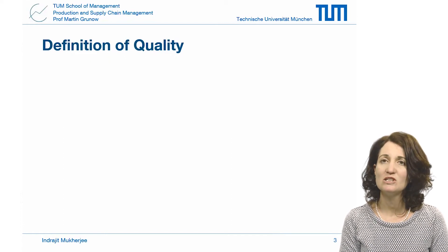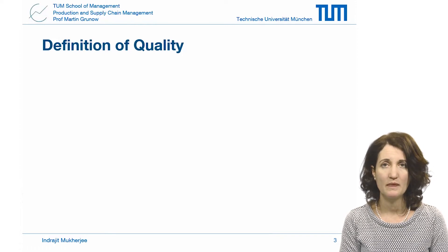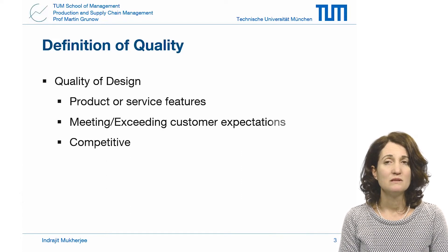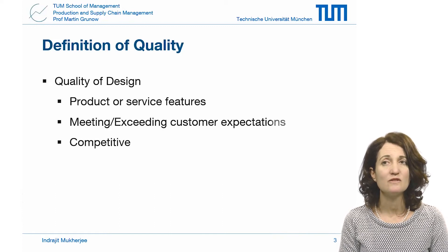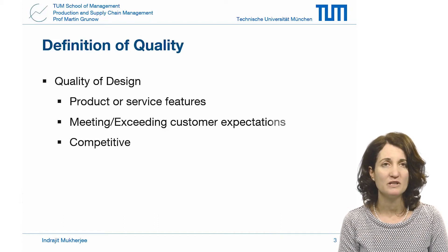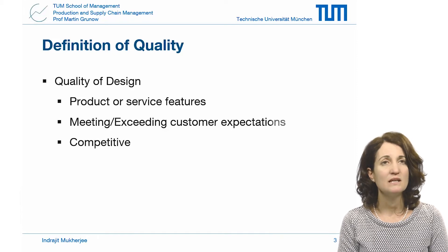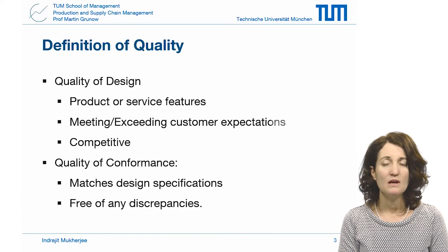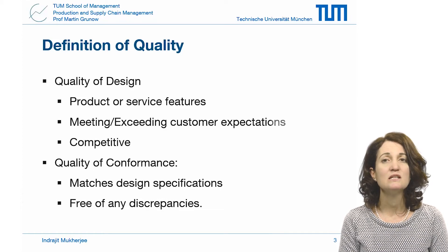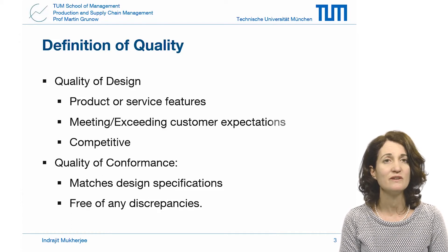As we discussed in the earlier lecture, when we consider quality, we think of two aspects. The first is the quality of design — this is embedded in the design specifications of the product or service. Does the design satisfy the customer needs, and how does the design compare with competition? The second is conformance quality, which depends on the production and delivery processes. Does the process output match the design specifications, and do we have generation of defects and discrepancies?